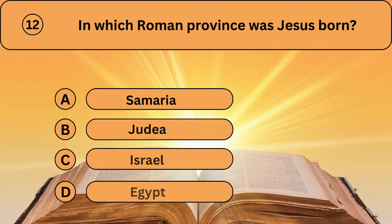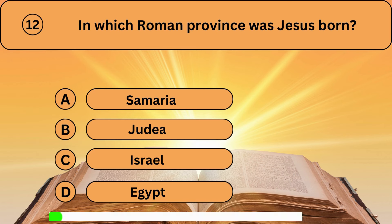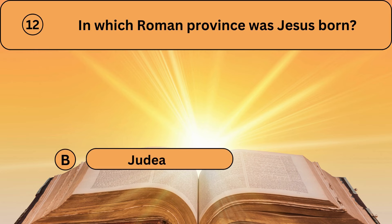Question twelve. In which Roman province was Jesus born? A. Samaria. B. Judea. C. Israel. D. Egypt. Judea is the correct answer.